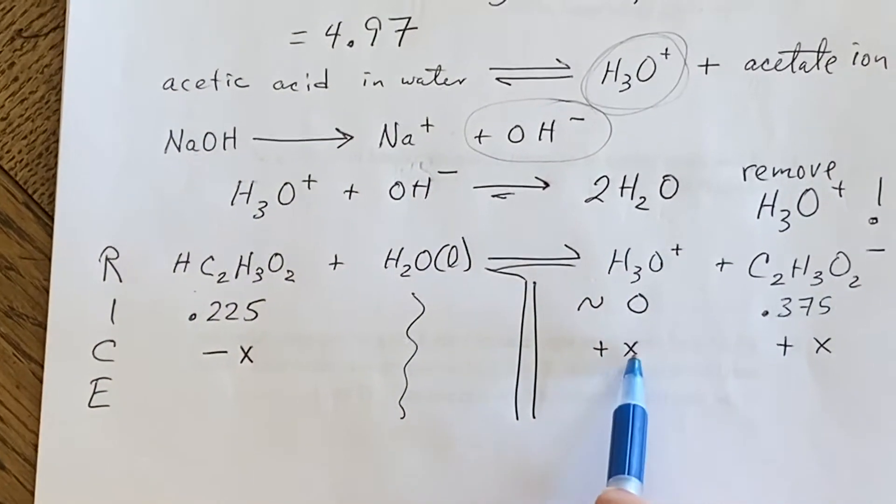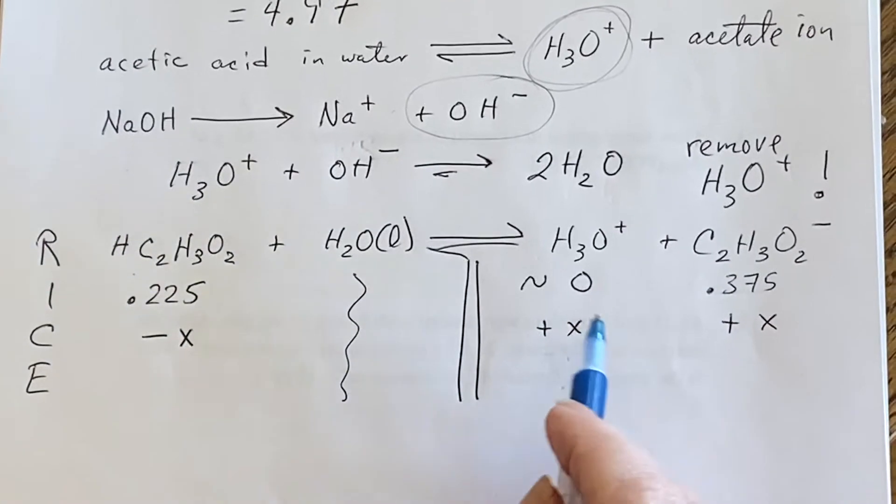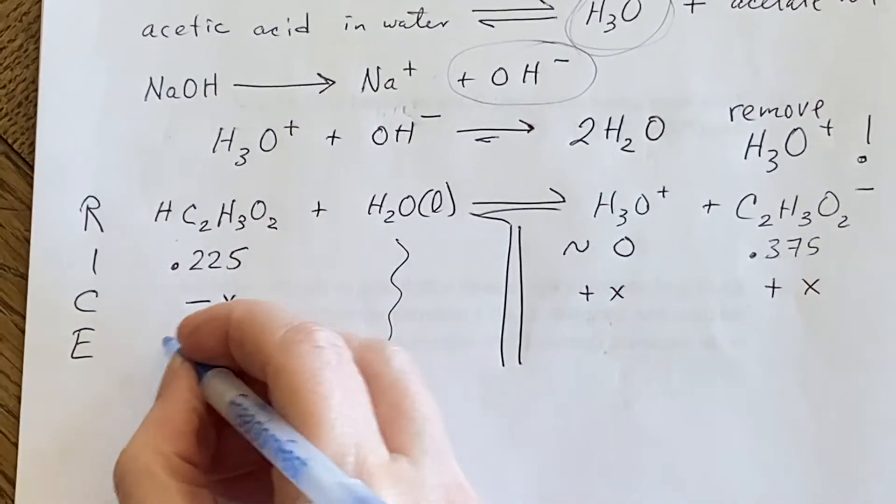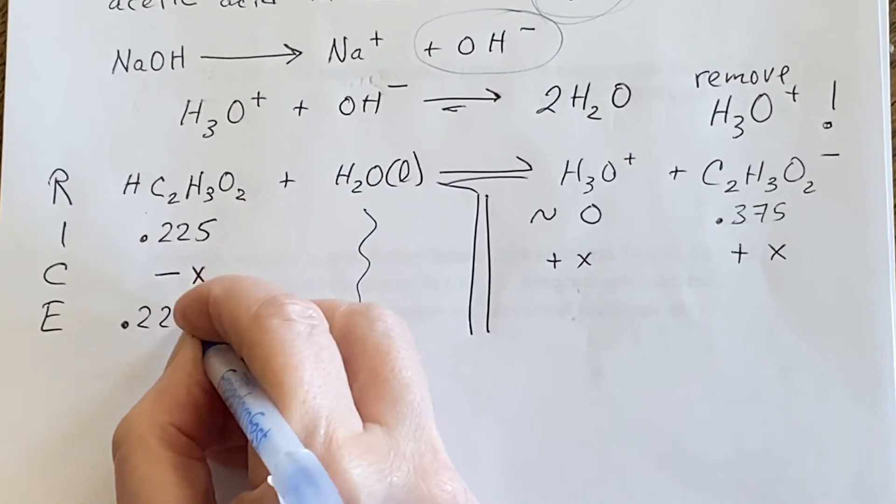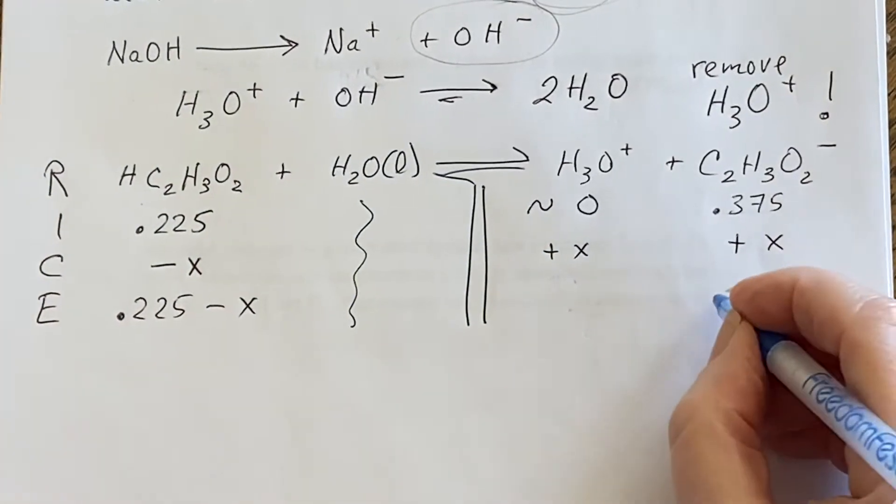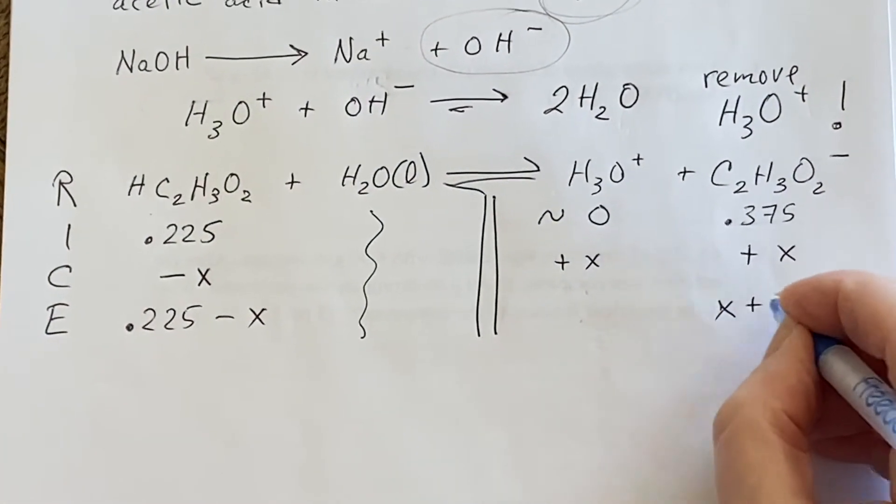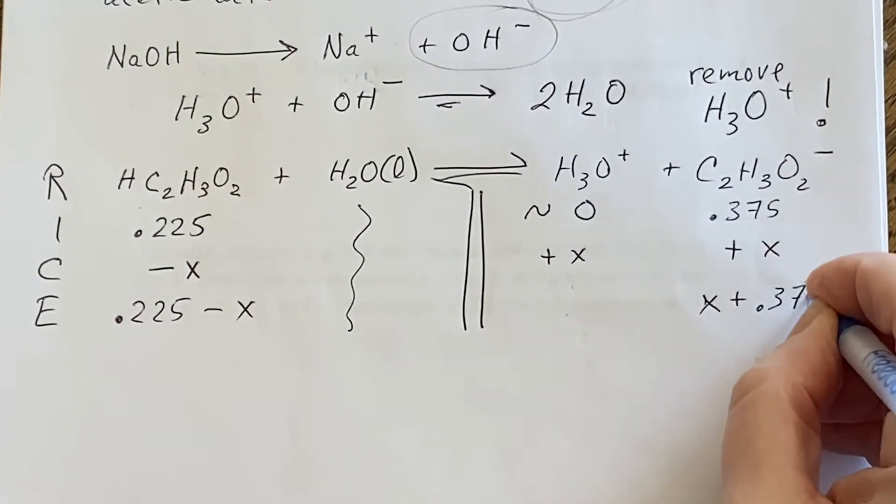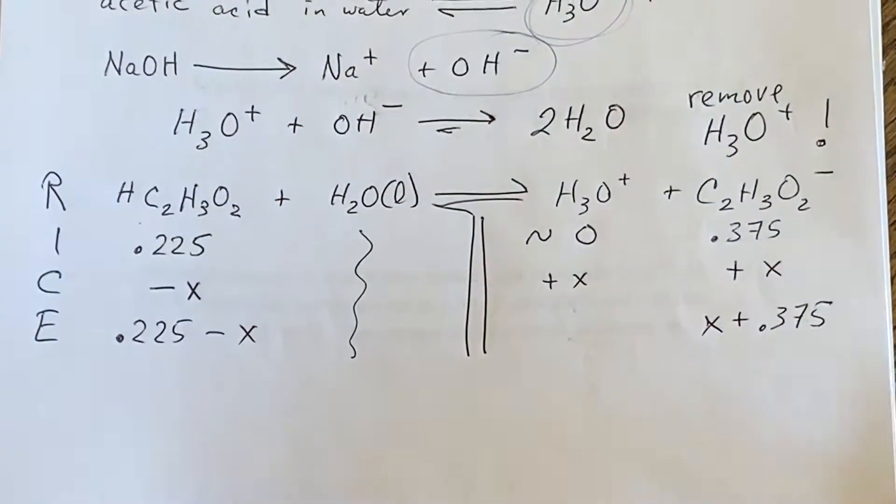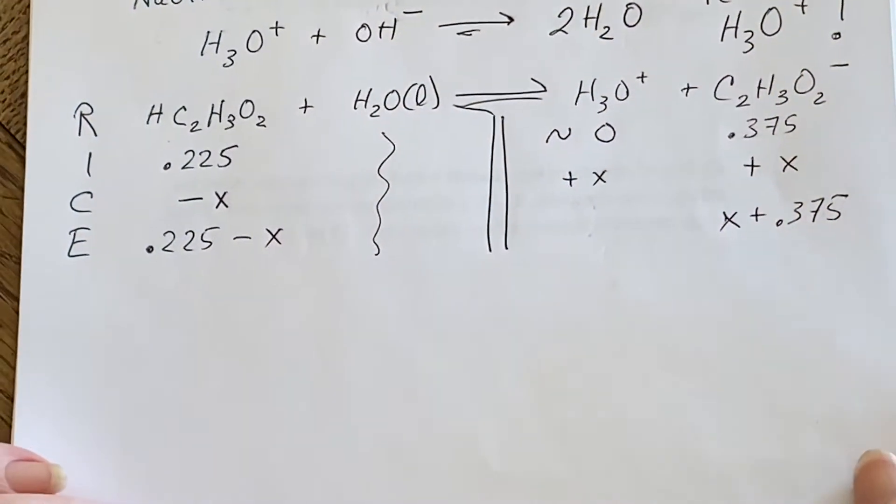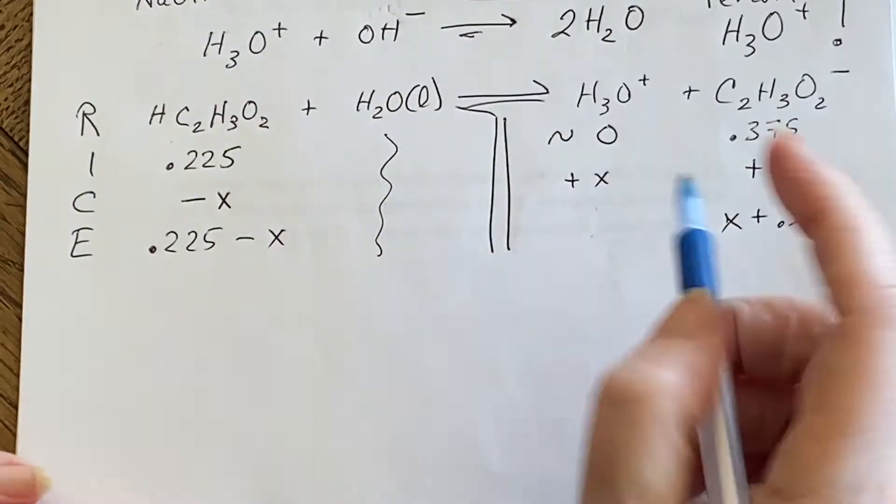I'm going to have to be thinking about what that means. Meanwhile, I could write what these are. 0.225 minus x. This is x plus 0.375.